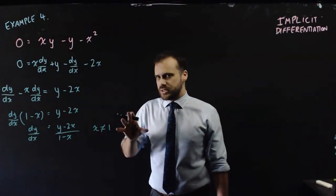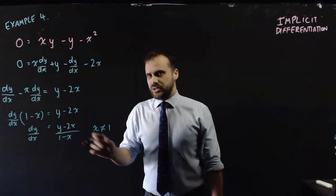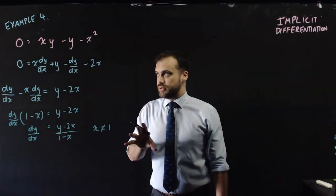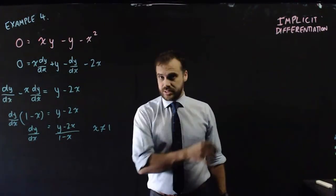we also need that x is greater than or less than something. In the previous two examples, I think it was 0. Whatever it is, you can't let your denominator be 0. Alright, that is implicit differentiation.